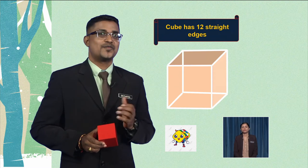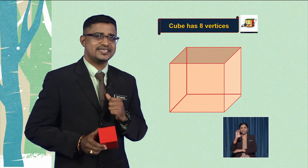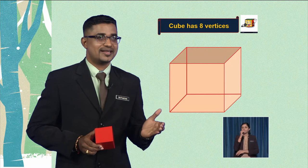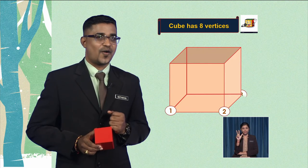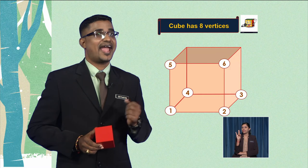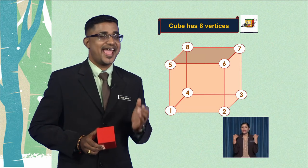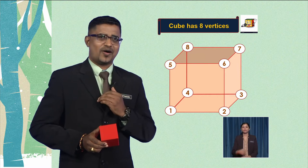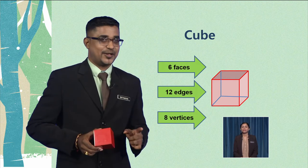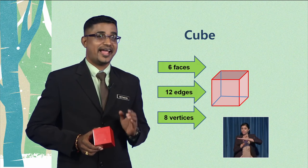Next, we proceed to the vertices of the cube. Can you guess the number of vertices? Let's count them together: 1, 2, 3, 4, 5, 6, 7 and 8. Very good! The cube has 8 vertices. In conclusion, the cube has 6 faces, 12 edges, and 8 vertices.